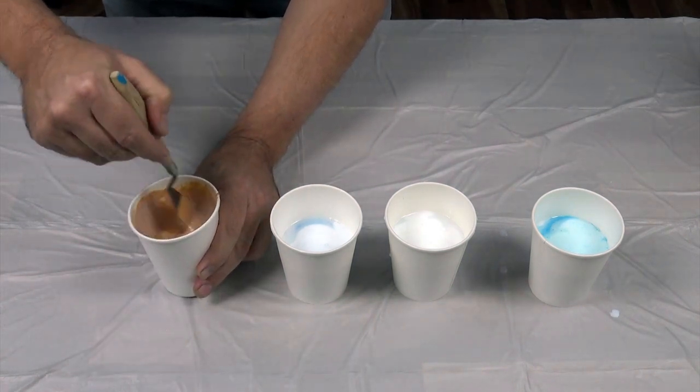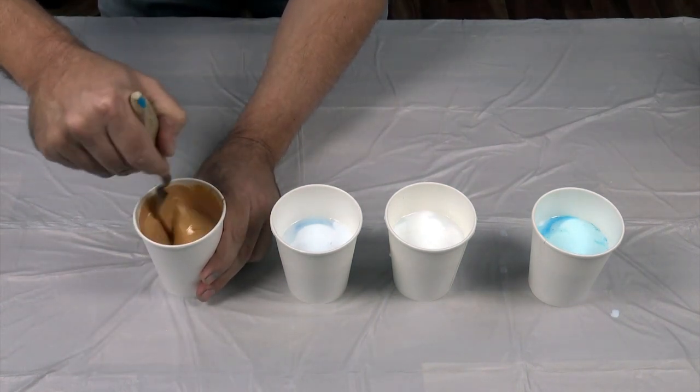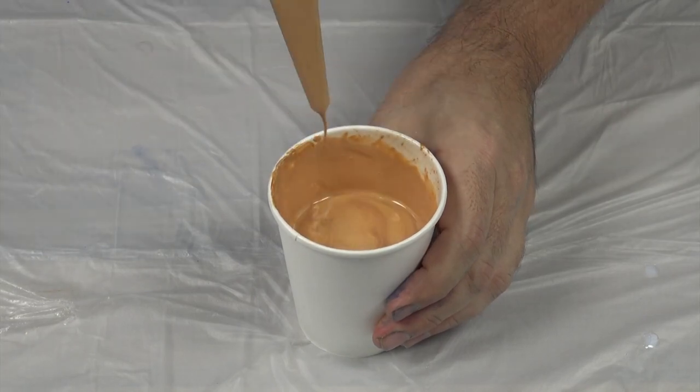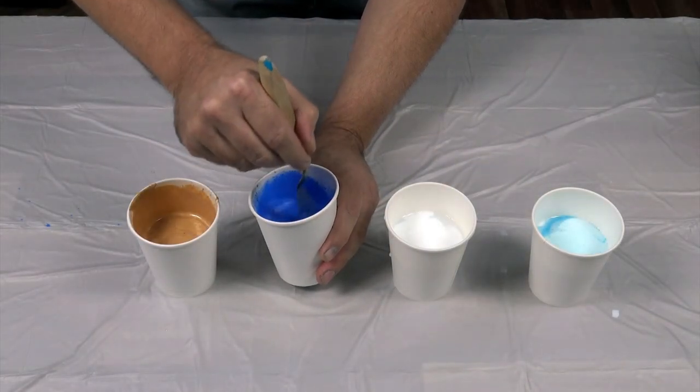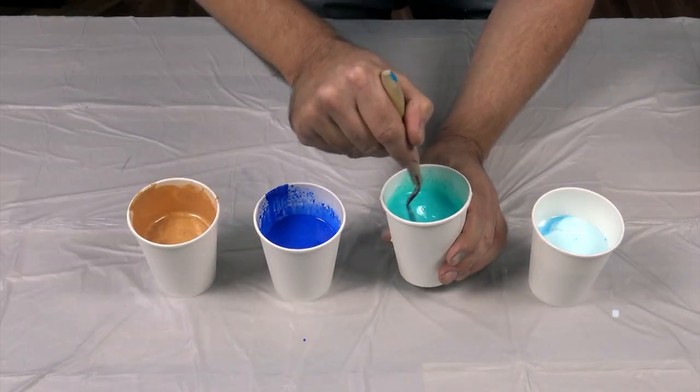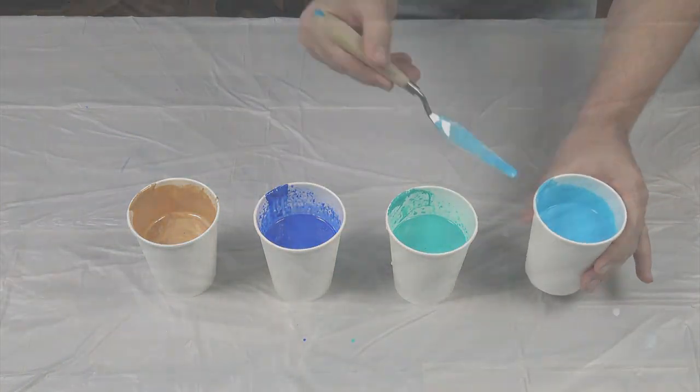A good way to check if it's the right consistency is to see if the paint runs off the blade in one consistent trail when you lift the knife up. If it's too thick, just add a little bit of water. If it's too thin, you can add a touch more paint.